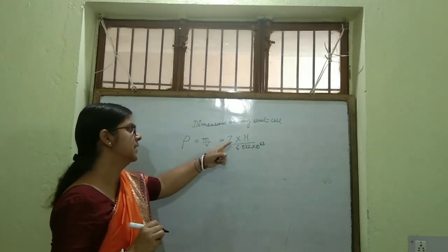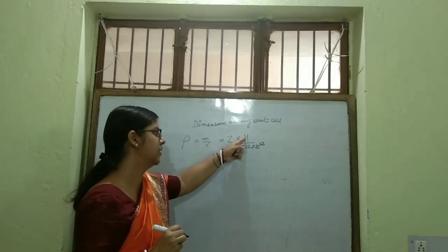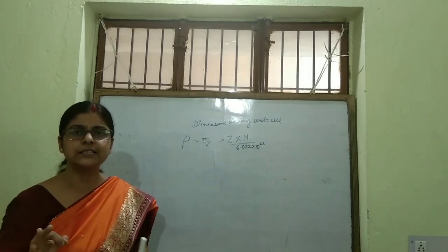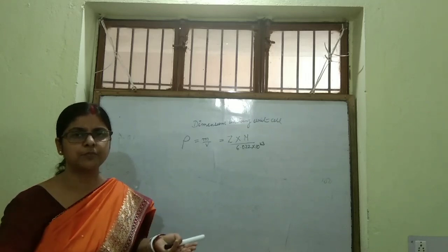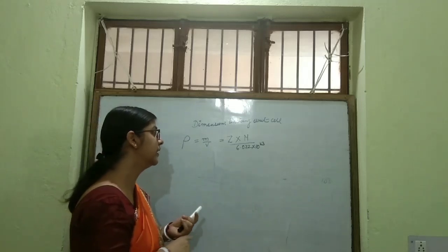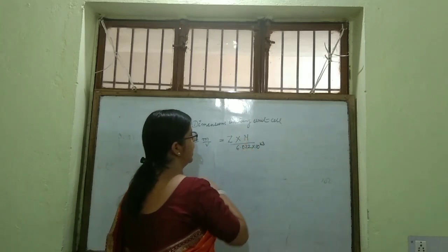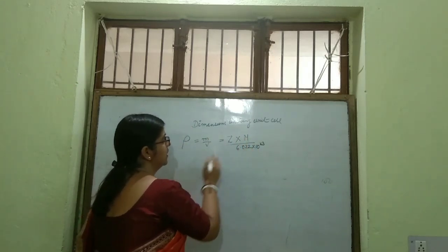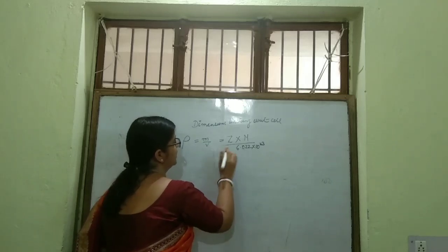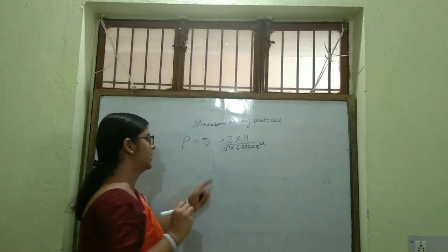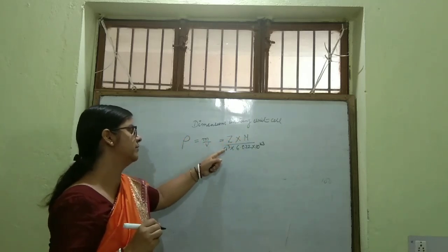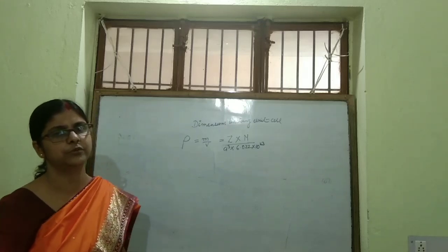Z is the number of particles present in the unit cell, M is atomic mass, and N_A is Avogadro's number. Avogadro's number of particles have mass equal to atomic mass, so to find the mass of one particle, we divide atomic mass by Avogadro's number. Multiplying by A³ for volume, we get the formula: Density ρ = Z × M / (A³ × 6.022 × 10²³).